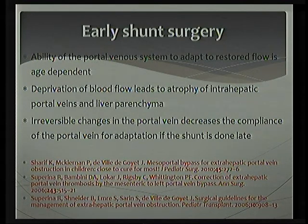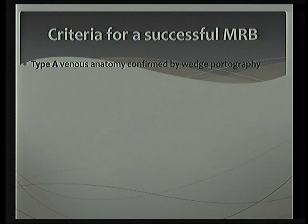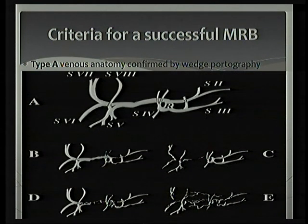Many studies advocate early shunt surgery because the ability of the portal venous system to adapt is age dependent, and irreversible changes can occur if surgery is delayed, leading to reduced blood flow when the shunt is done late. Several criteria have been laid down at the Baveno 6 consensus; most importantly, Type A venous anatomy — meaning a patent left and right portal vein — is required.